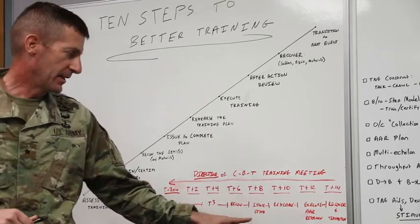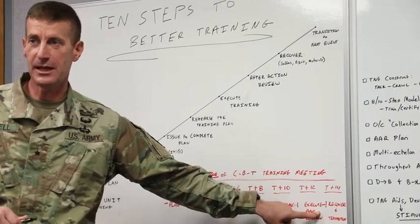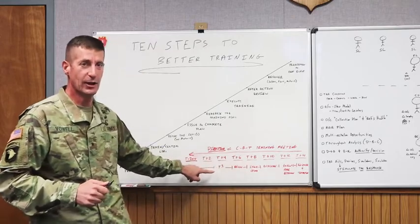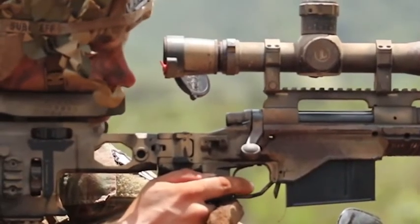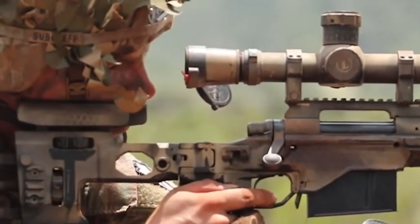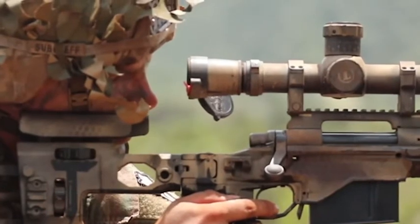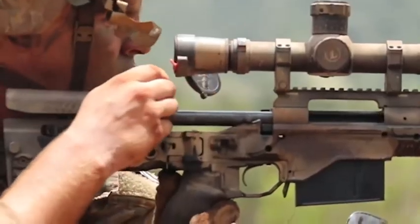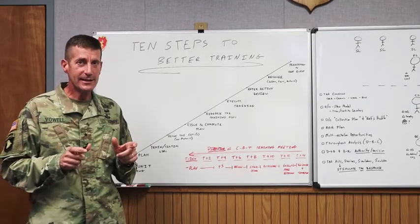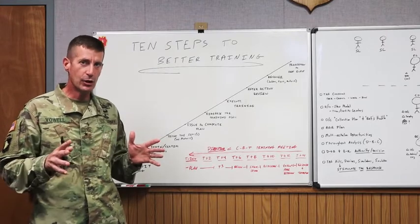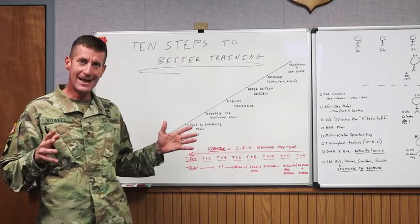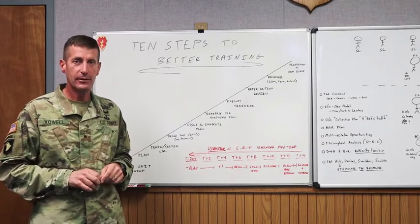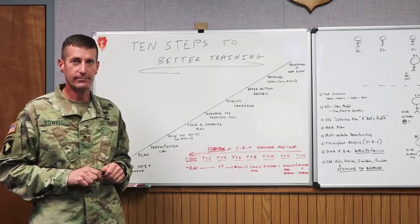By the time you get to executing your training plan at T plus 12 in a training meeting, you'll be going back to T plus 4 and wasting time. If you think about how to apply this in time and space in a training meeting, you'll have a much more impactful training event and the best readiness possible for your company, battery, troop, or battalion level training event. That's the lesson for today. Hope you've taken away a couple of key TTPs to empower your units and flesh out what the 10-step training model can give your organization. We'll look forward to the next video, where we'll talk about a better way to do live fires. Thanks.